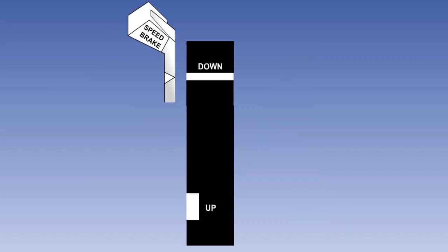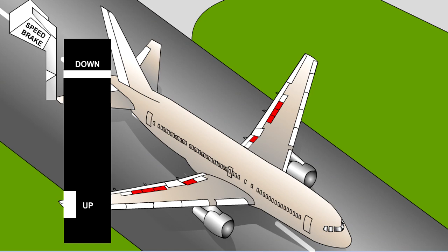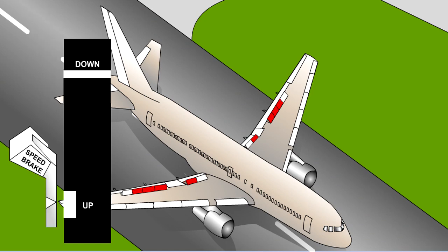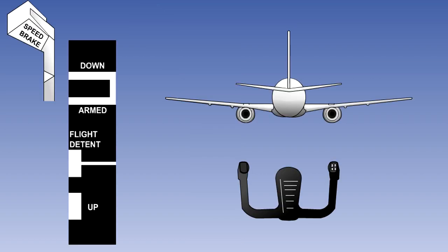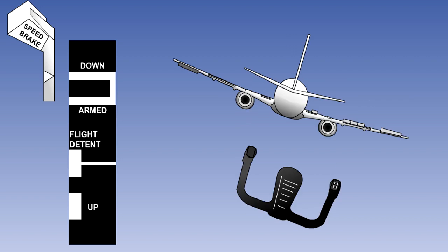The pilot controls the spoilers by a speed brake lever, adjacent to the thrust levers. Speed brake lever inputs produce symmetrical spoiler operations. Operating the lever on the ground will extend all the spoilers. In flight, only the flight spoilers will be deployed. The speed brake lever typically has a number of detents marked on it. With the lever in the down detent, all flight and ground spoilers are retracted. The flight spoilers are, however, available for roll assist.